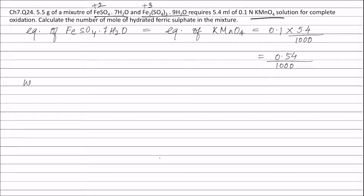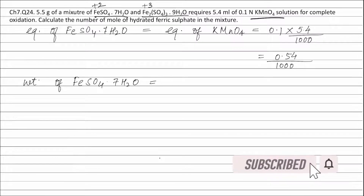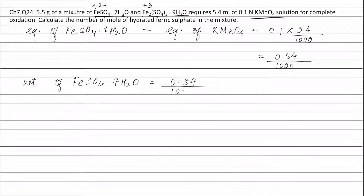Therefore, weight of FeSO4·7H2O equals equivalents of FeSO4·7H2O (0.54/1000) multiplied by the equivalent weight of FeSO4·7H2O, which is 278. This equals 0.150 grams. Therefore, the weight of FeSO4·7H2O is 0.150 grams.